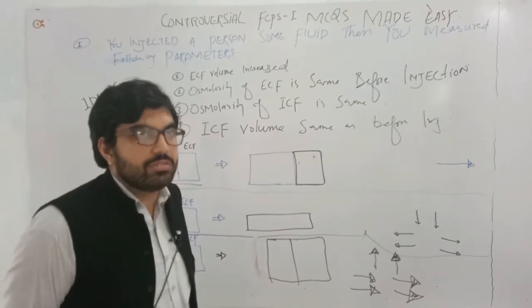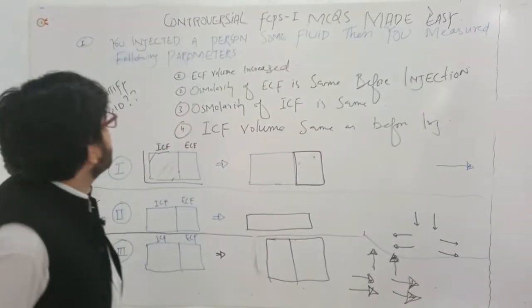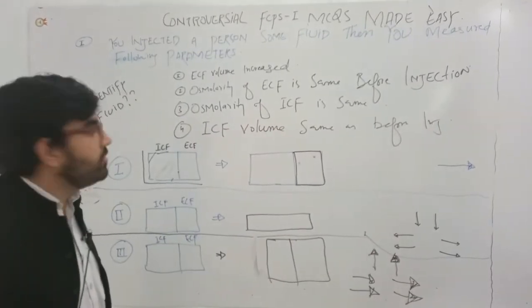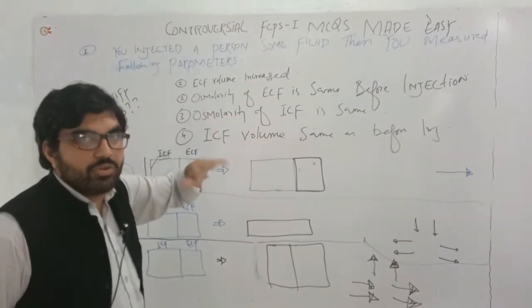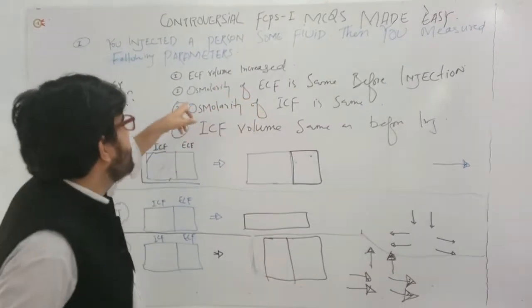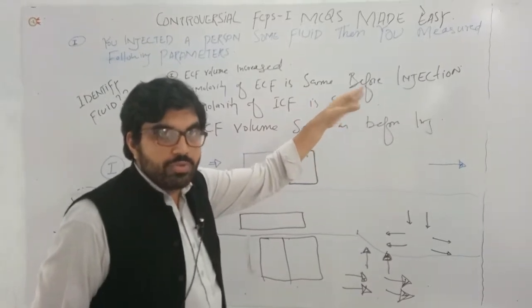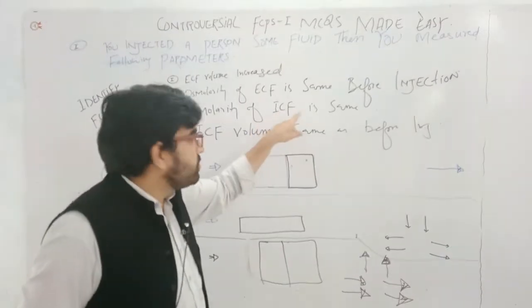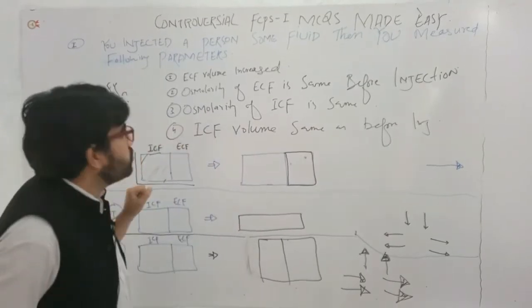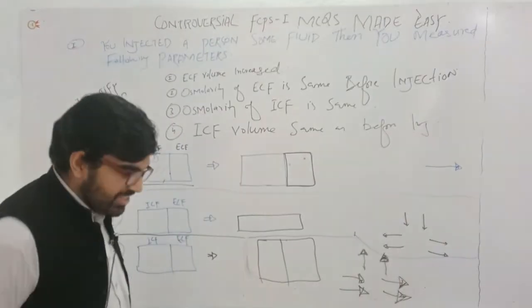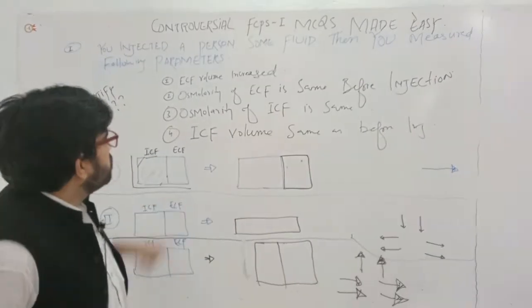This is a practice question from the previous video regarding fluid management. You injected a person with some fluid and then measured the following parameters: extracellular fluid volume is increased compared to before injection, osmolality of extracellular fluid is the same as before injection, osmolality of intracellular fluid is also the same, and intracellular fluid volume is also the same. You have to identify which type of fluid this is — isotonic, hypotonic, or hypertonic.